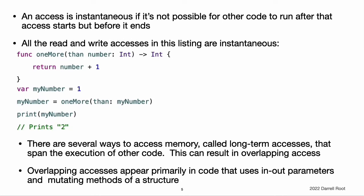An operation is atomic if it uses only C atomic operations; otherwise, it's non-atomic. For a list of those functions, see the standard atomic man page. An access is instantaneous if it is not possible for other code to run after that access starts but before it ends. By their nature, two instantaneous accesses cannot happen at the same time. Most memory access is instantaneous.